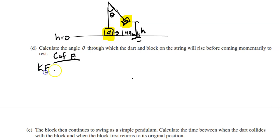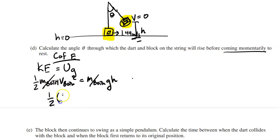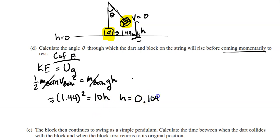Initially, all energy is kinetic; at the highest point it's all gravitational potential energy (velocity = 0). So: ½·m·V_both² = m·g·h, which simplifies to ½ × (1.44)² = 10 × h. Solving, h = 0.104 meters.